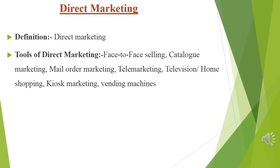Television or home shopping is through television - like tele-brand shows where they demonstrate a product's benefits and you see a toll-free number to call and get the product. Kiosk marketing is where the company places machines in railway stations, airports, and busy locations where consumers can directly search for product information, check availability, and place orders through the machine. Vending machines are another form - like coffee machines placed in retail stores where you insert a coin and get coffee.